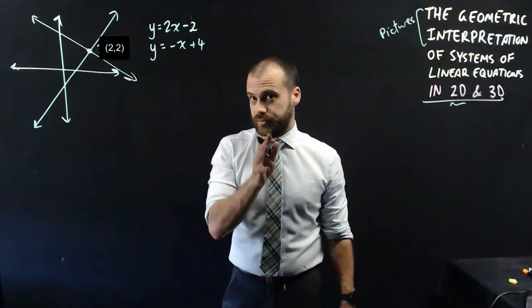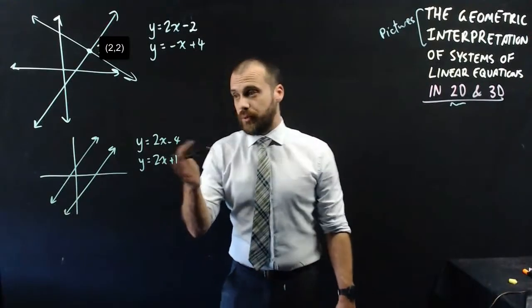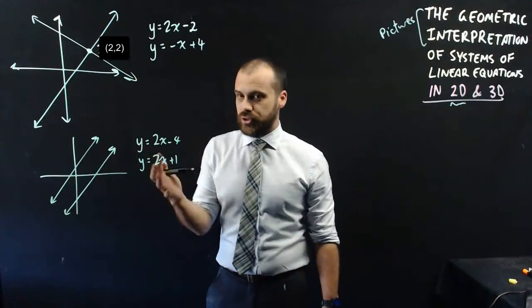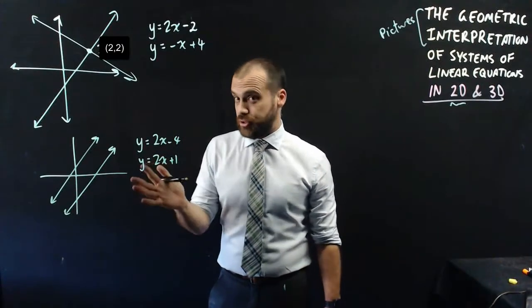There are two other things that can happen as well. They could be parallel, and if they were parallel, that means they're never going to meet. They're a set of train tracks. Both have a gradient of two, never going to meet, no solution there.